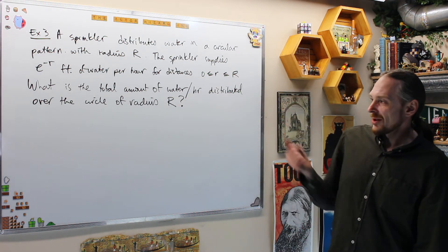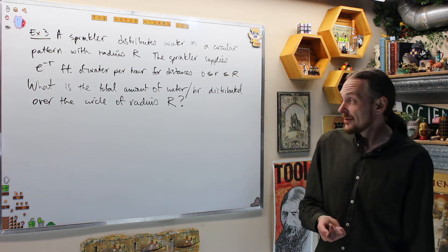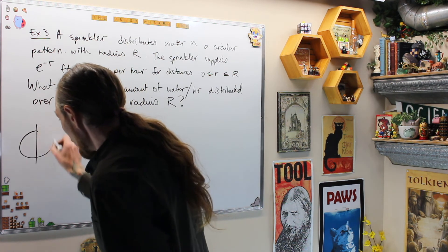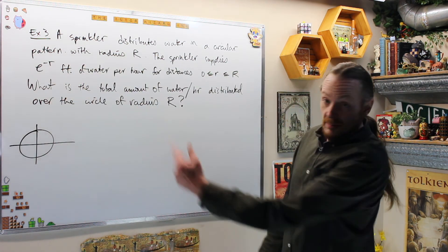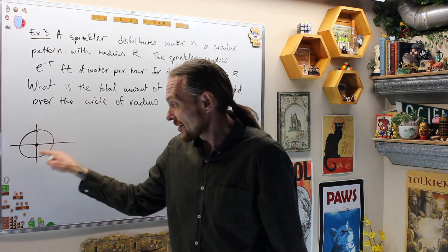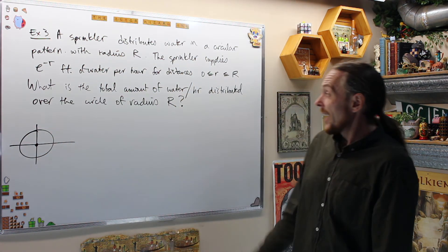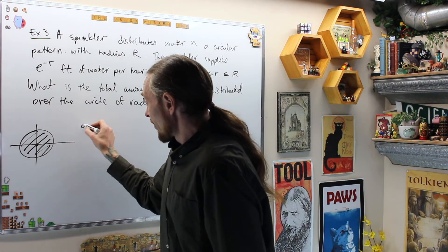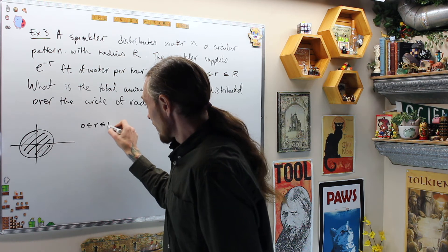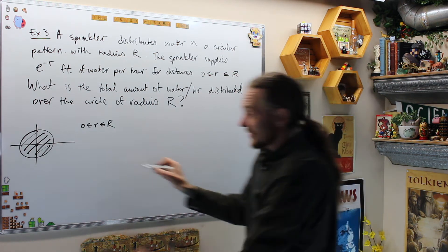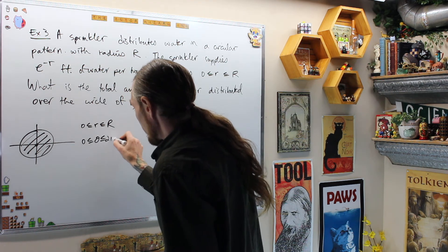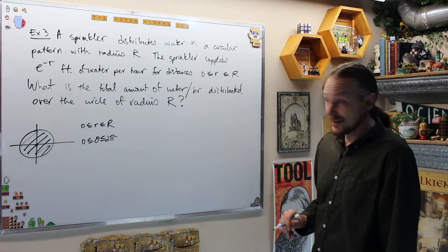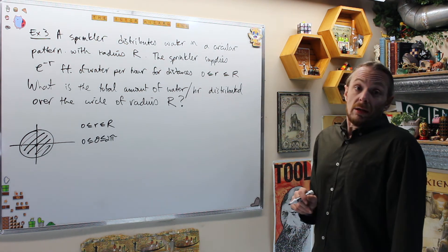This is the distribution of the amount of water as a function of R and theta. What is the total amount of water? It wants to know, distribute it over the circular radius per hour. Let's find out. First of all, I draw myself a picture to help anyways. I have a sprinkler at the center. It's distributing water in a circular pattern over the whole region, and it distributes water to e to the negative R. What that says is this is my region, so what are my bounds? Zero is less than R is less than big R, which was given to us. And now it says zero is less than or equal to theta is less than or equal to 2 pi. Because it goes all the way around.